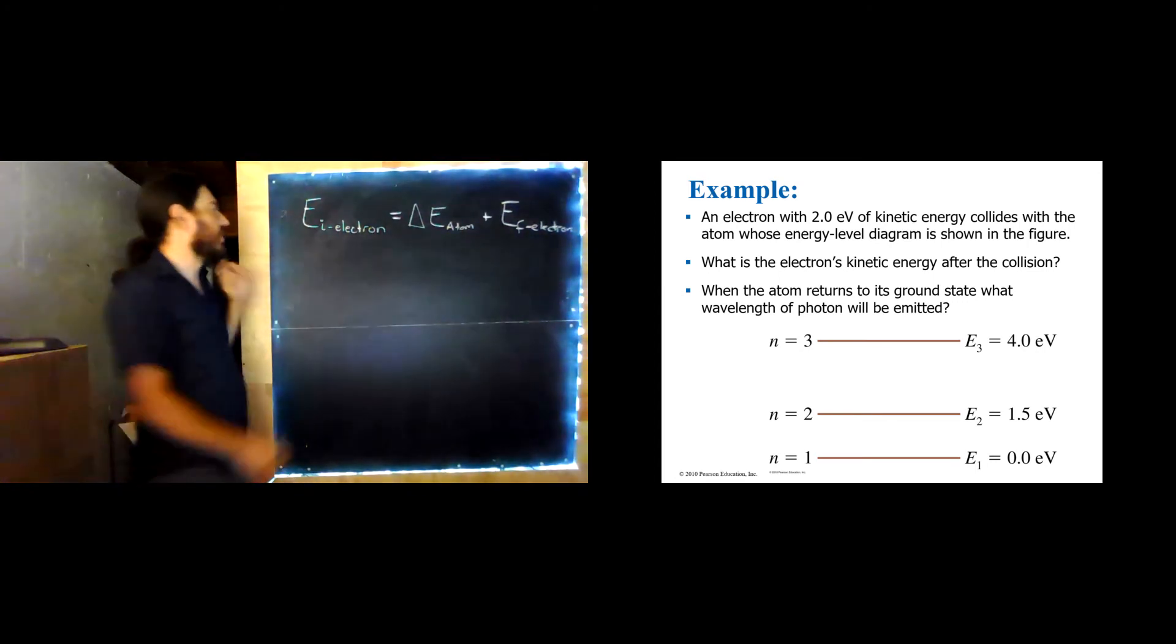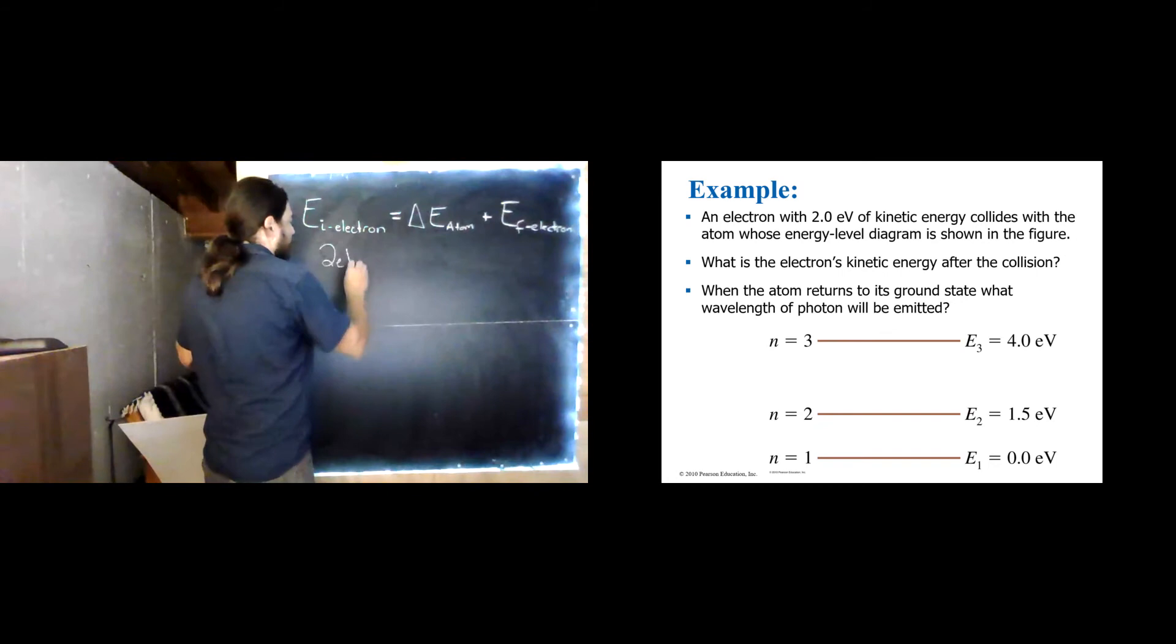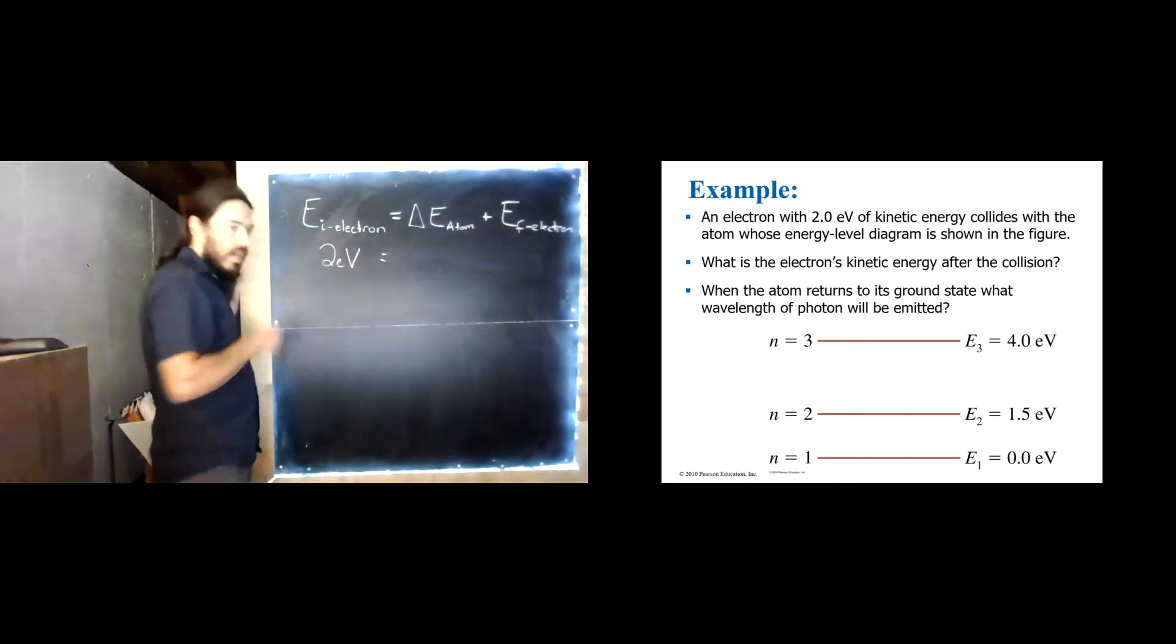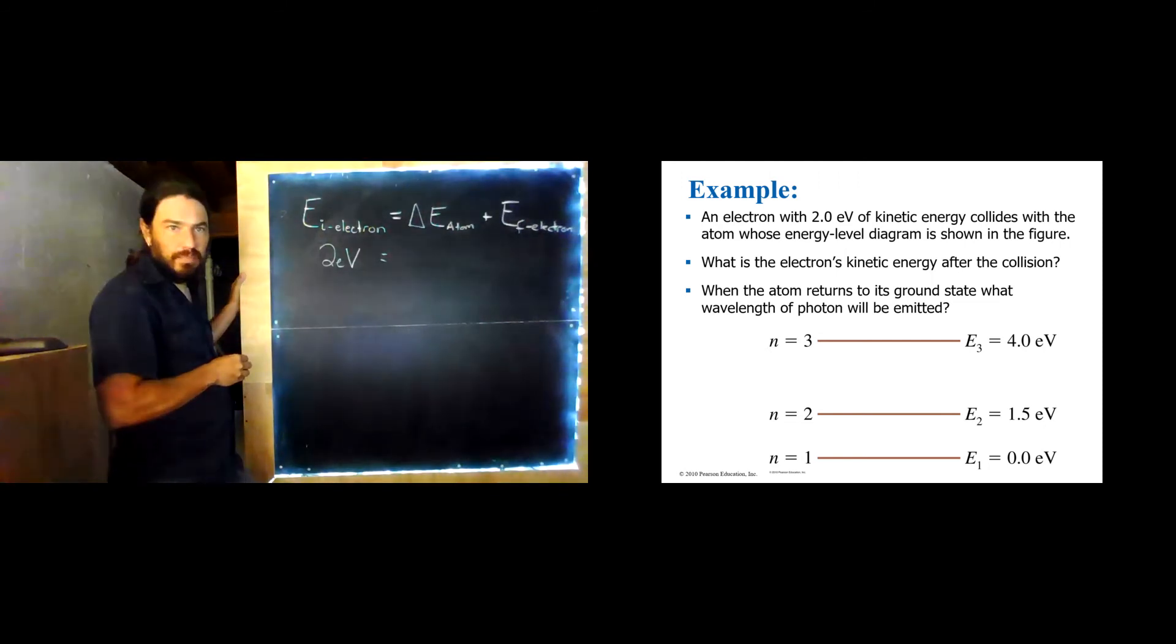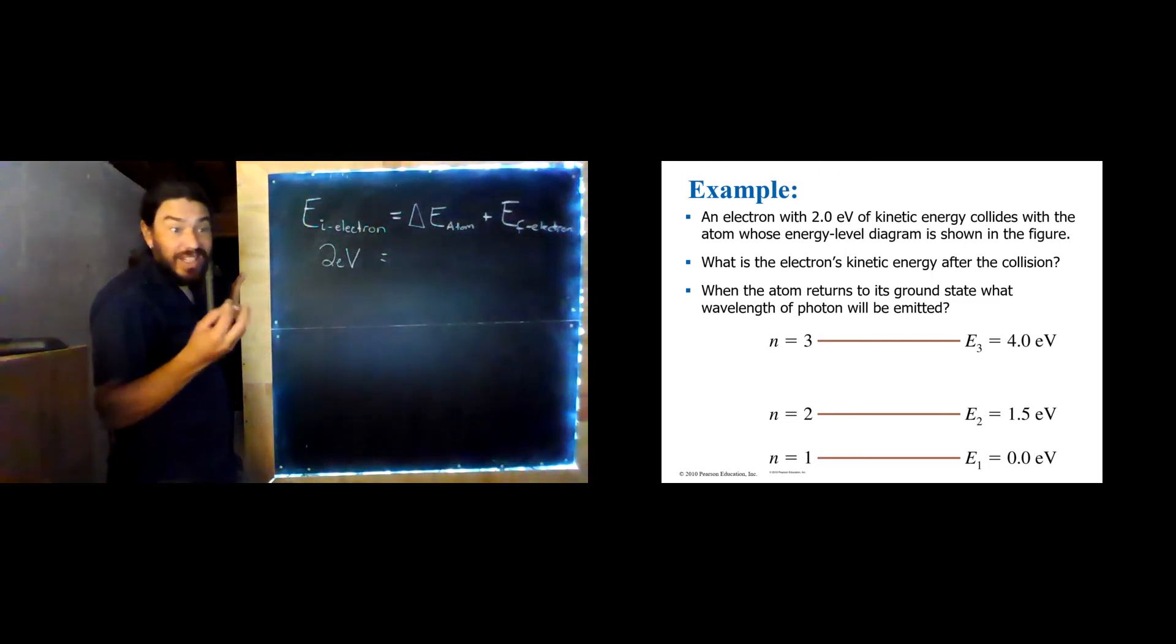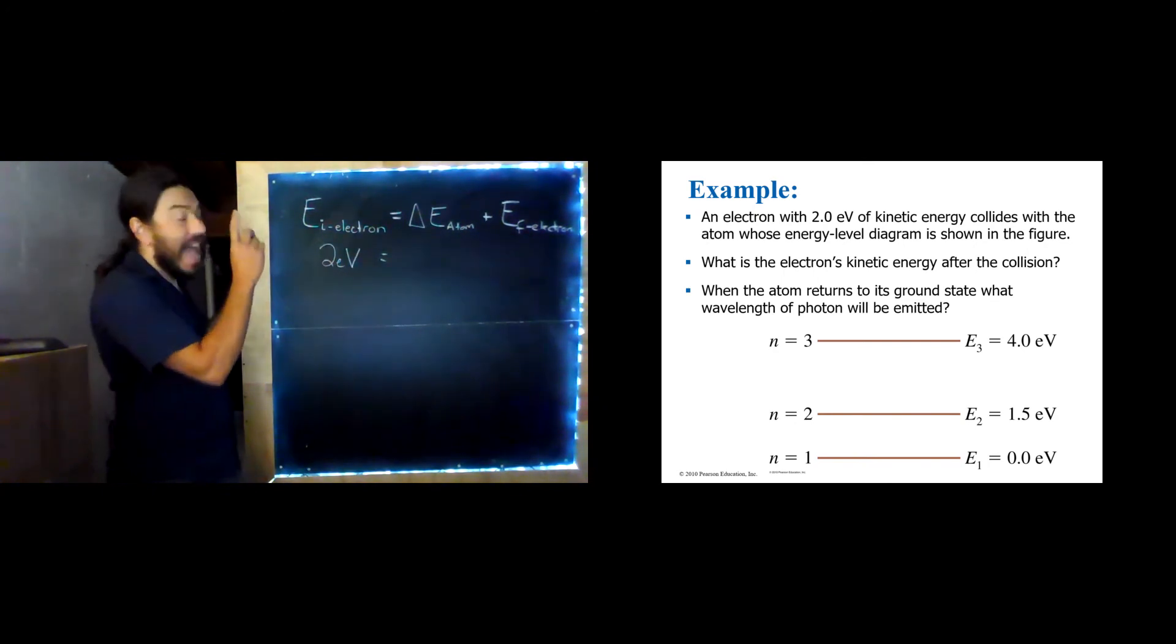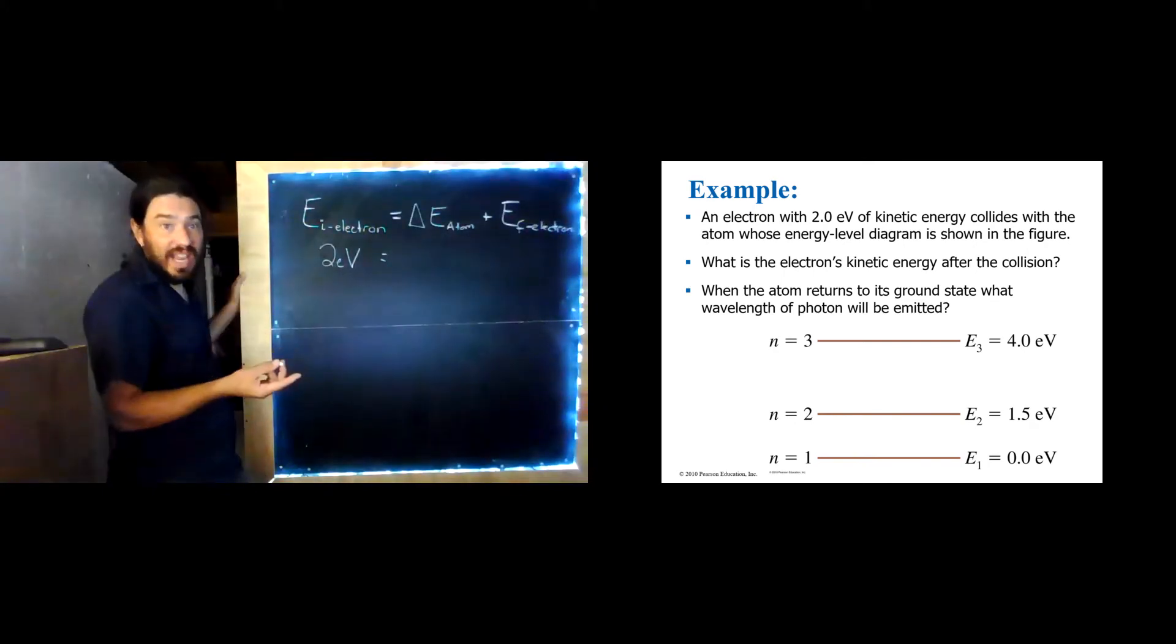Well, recall that this was 2 electron volts. Let's look at our energy level diagram. Is 2 electron volts enough to get us into the n equals 3 state? It's not. We would need 4 electron volts to get to the n equals 3 state. Can it get us to the n equals 2 state? It totally can. It can get this atom into the n equals 2 state.